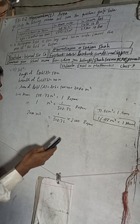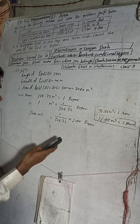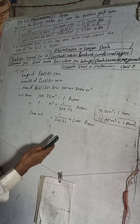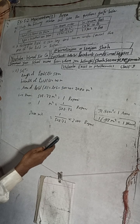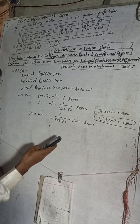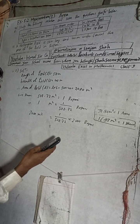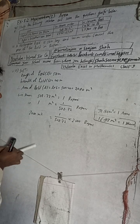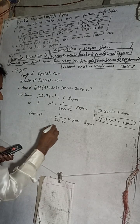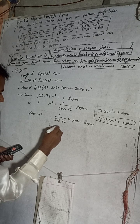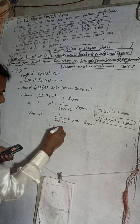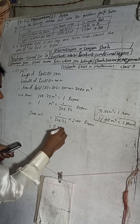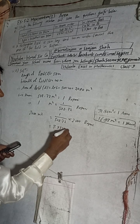2000 divided by 508.72 gives us approximately 3.93 ropni.